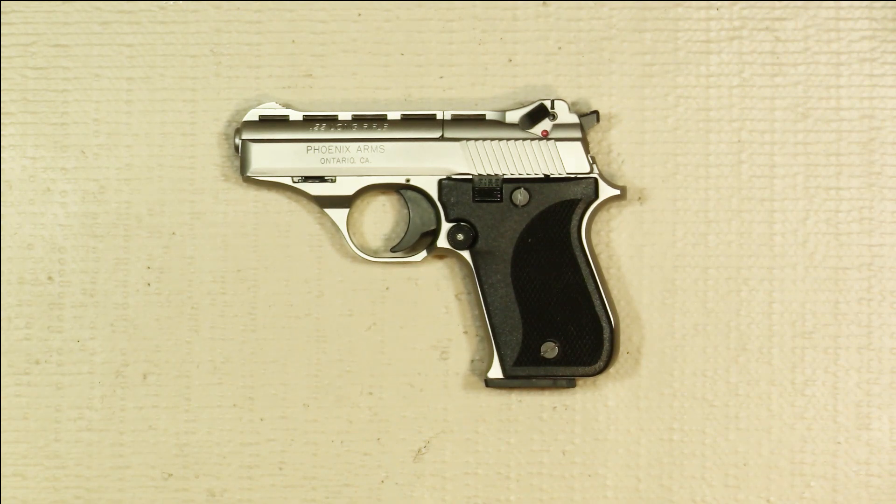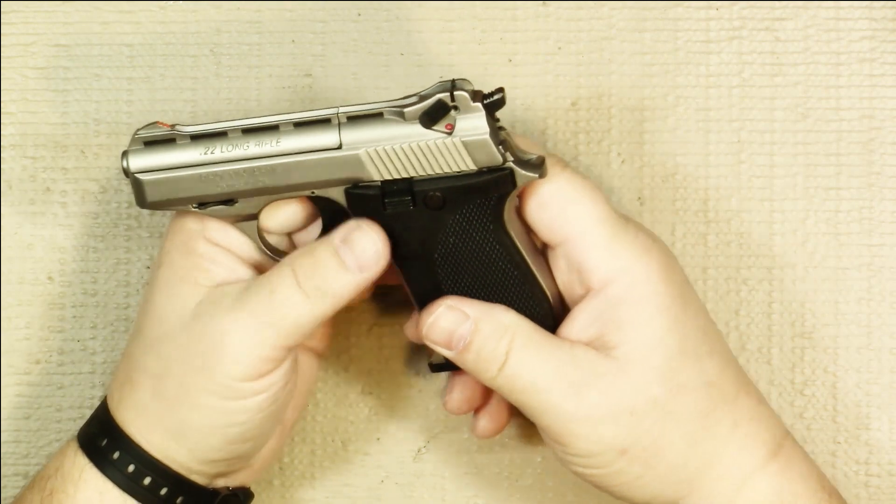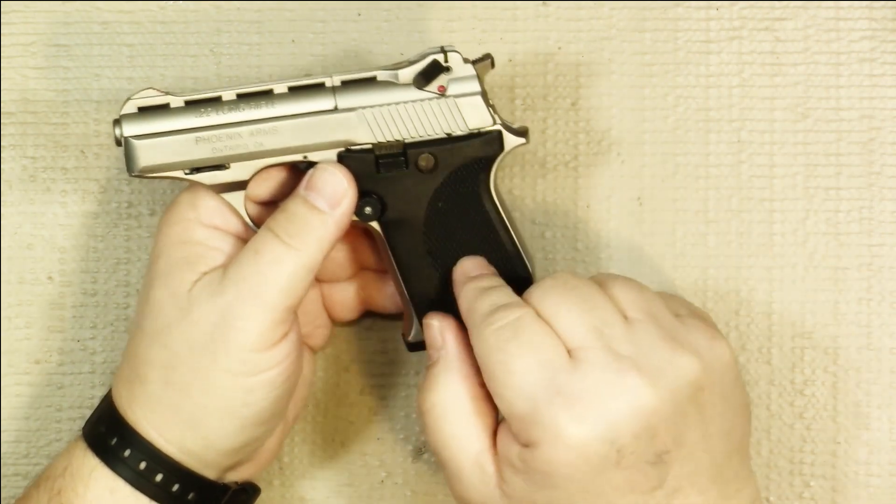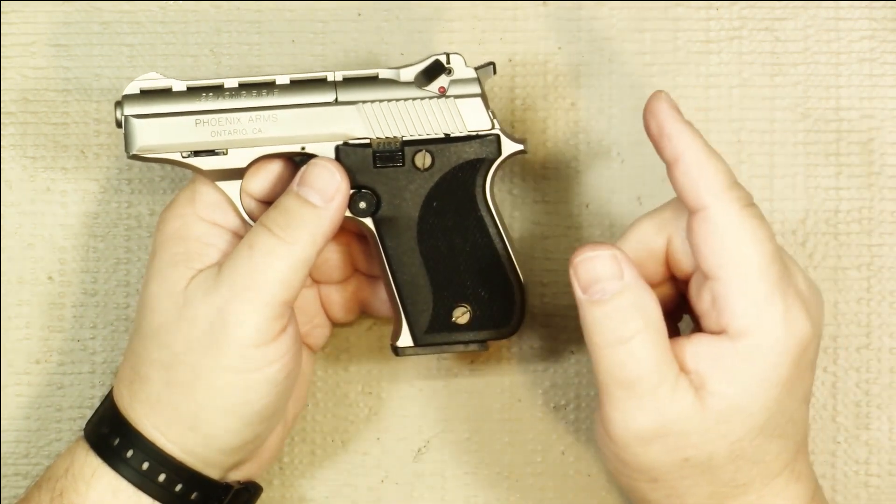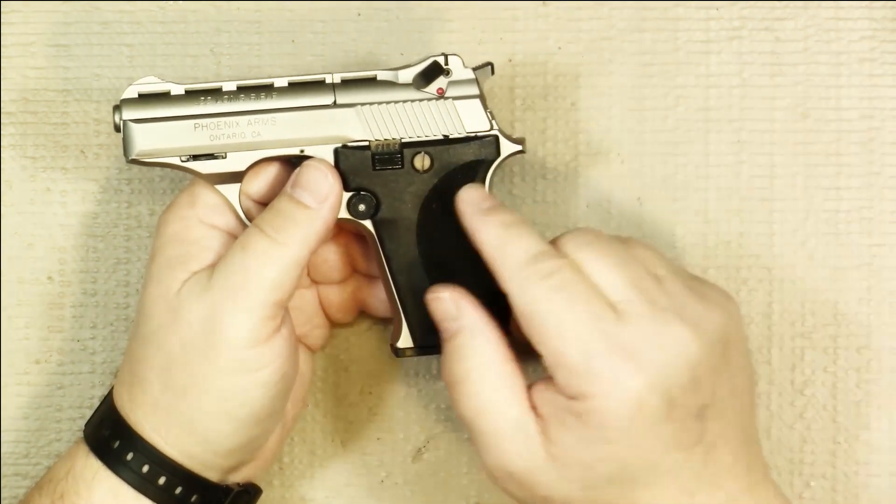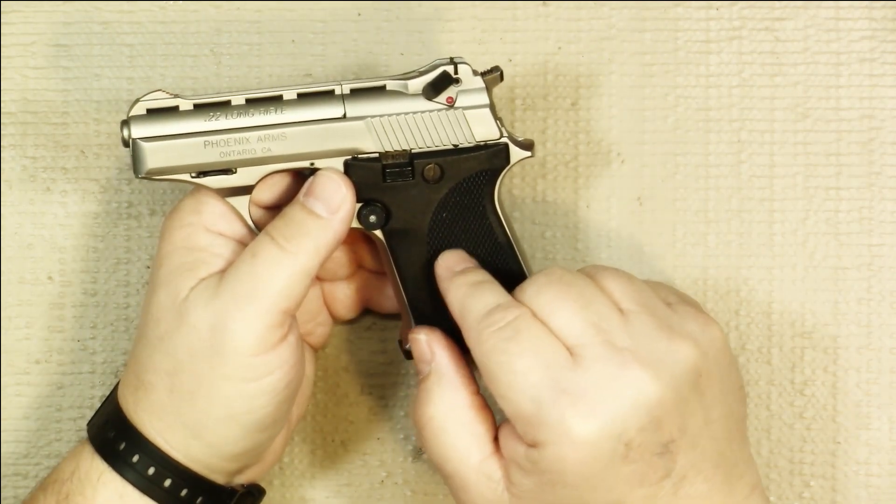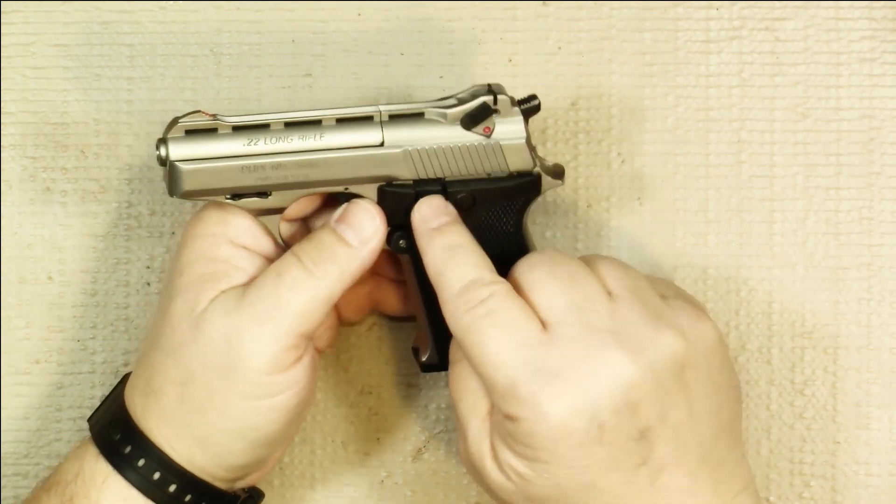Before working on any firearm you need to make sure it is free and clear of any ammunition. With the Phoenix Arms HP-22 because of the safety interlock, unless you've modified your pistol already, I have a video that shows how to do that separately. But assuming that yours is still in the original configuration, you can't take the magazine out unless it's on safe.